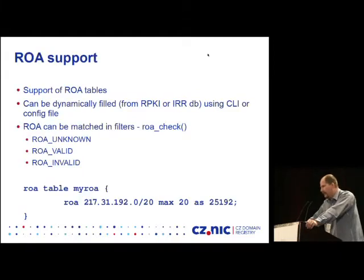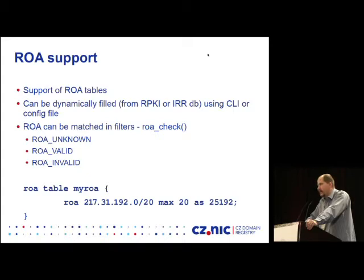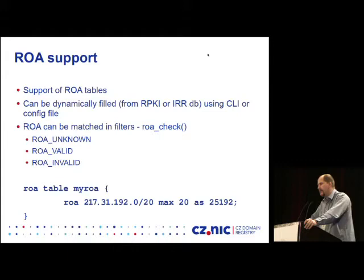Another feature that may be interesting is ROA support. We added basic support for ROA tables. There is something slightly new in Bird here: Bird's command line interface is normally for displaying information and was never meant for configuration. In the case of ROA, we slightly changed this philosophy — ROA tables can be filled either statically from a config file, or you can use the command line interface to add new ROAs. Those ROAs can be fed from RPKI, IRR databases, and similar sources, improving your filtering. ROA tables can then be matched in filters, and there are three possible reactions when a prefix matches.